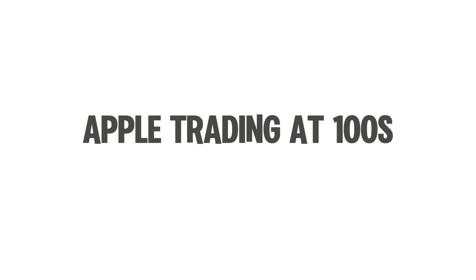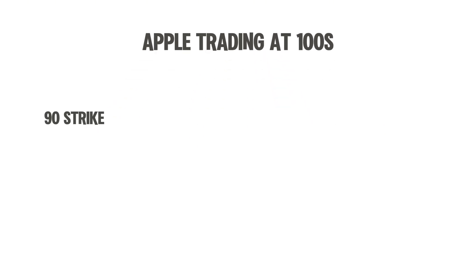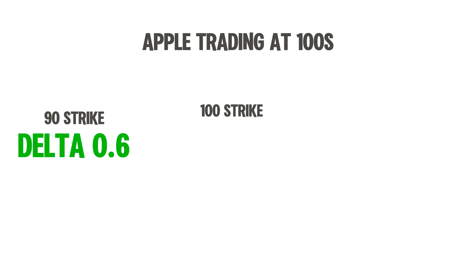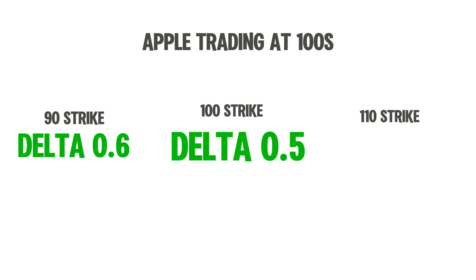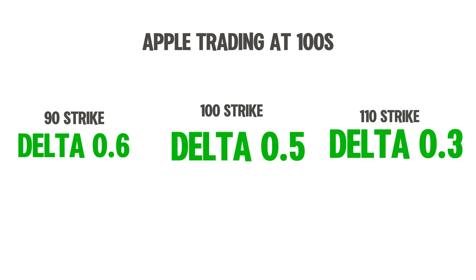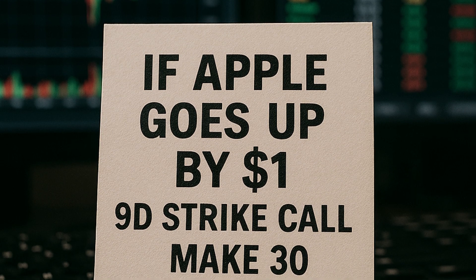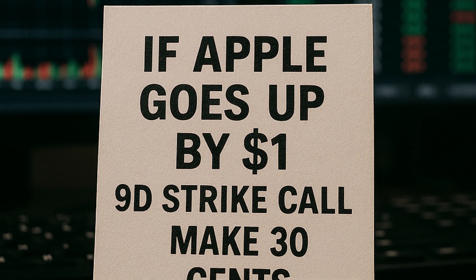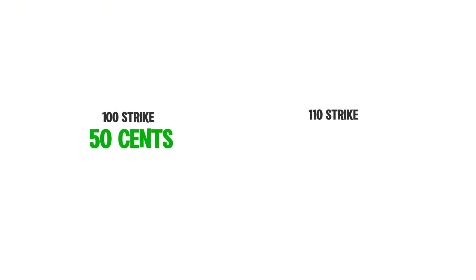Let's say that Apple is trading at $100 right now. A 90 strike call option might have a delta of 0.6. A 100 call option might have a delta of 0.5. And a 110 strike call option might have a delta of 0.3. So if Apple goes up by $1, that 90 strike call is going to make 60 cents a contract, the at-the-money 100 strike is going to make 50 cents, and the 110 strike is going to make 30 cents.